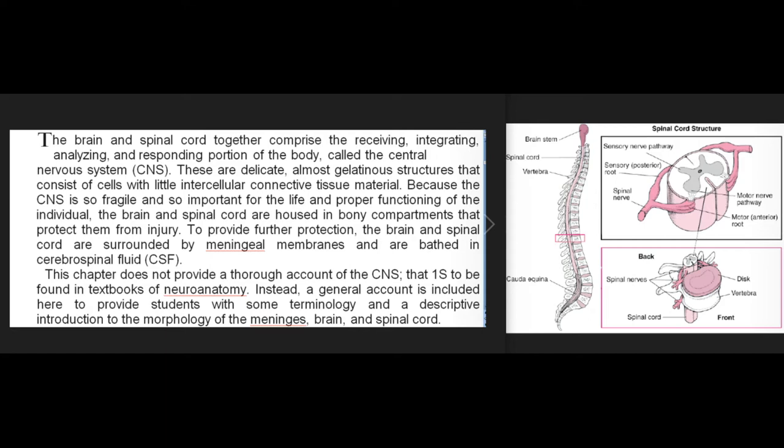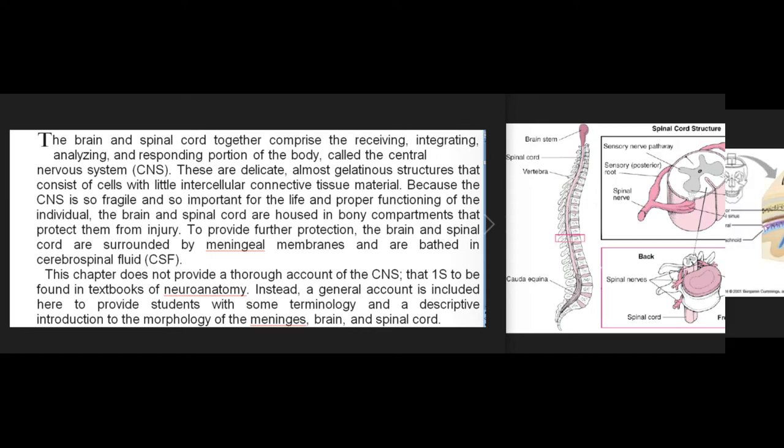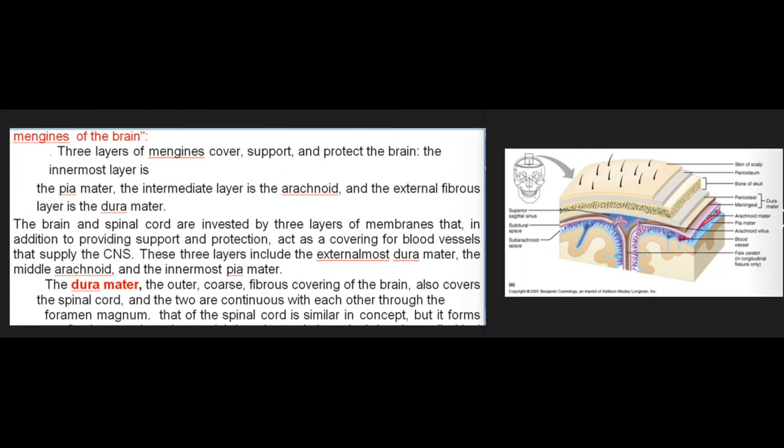This chapter does not provide a thorough account of the CNS — that is to be found in textbooks of neuroanatomy. Instead, a general account is included here to provide students with some terminology and a descriptive introduction to the morphology of the meninges, brain, and spinal cord.